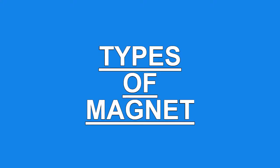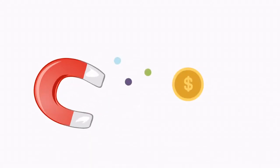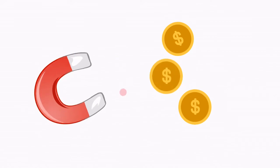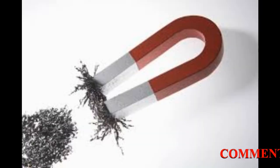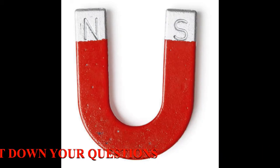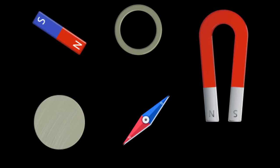Let's talk about types of magnets. You can see so many gadgets that are using magnets, and they use different types and shapes of magnets. Magnets are made in different shapes and they are named according to their shape. Each magnet is made according to its need. Some examples are bar magnet, dumbbell shape magnet, horseshoe magnet, cylindrical magnet, etc.